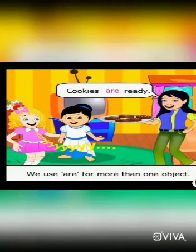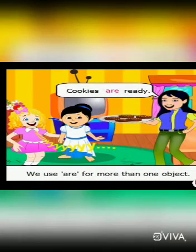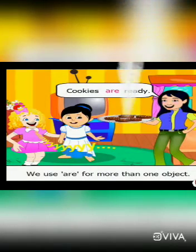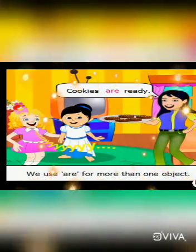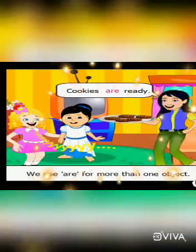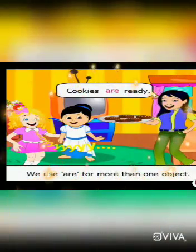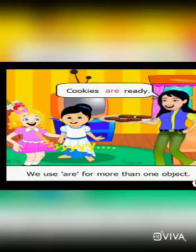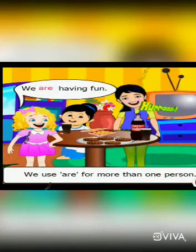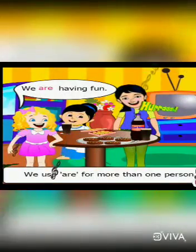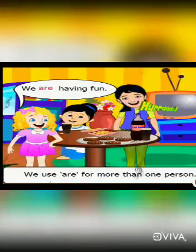Cookies, cookies, cookies are ready! 'Cookies' means there is more than one cookie, so we use 'are' after a plural form. We use 'is' after a singular noun or pronoun, like 'He is a good boy' or 'A bird is flying.' We use 'are' after a plural form. For example: 'We are playing.' Ritu says: 'We are having fun.' There are many persons, so we use 'are'.